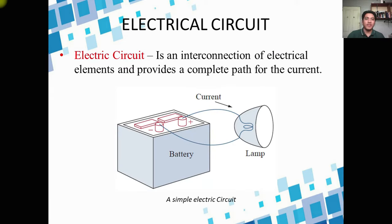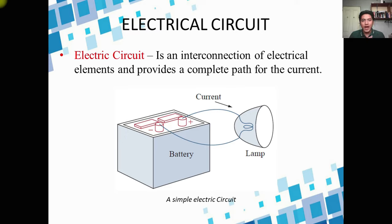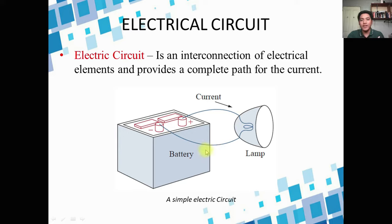What is an electrical circuit? An electric circuit is an interconnection of electrical elements and provides a complete path for the current. If the path is not complete, meaning there is an open in the wire, then that is not an electrical circuit.